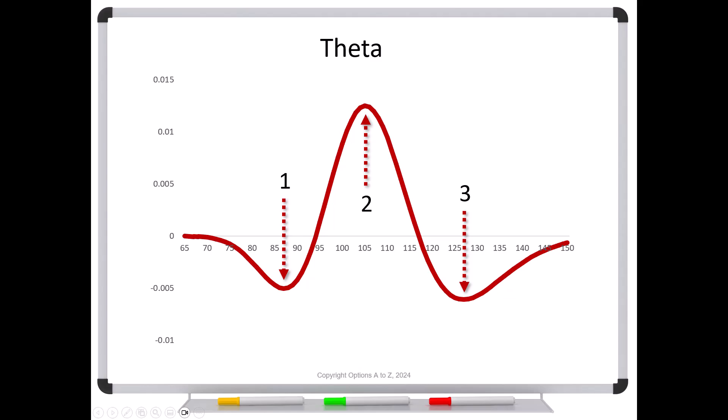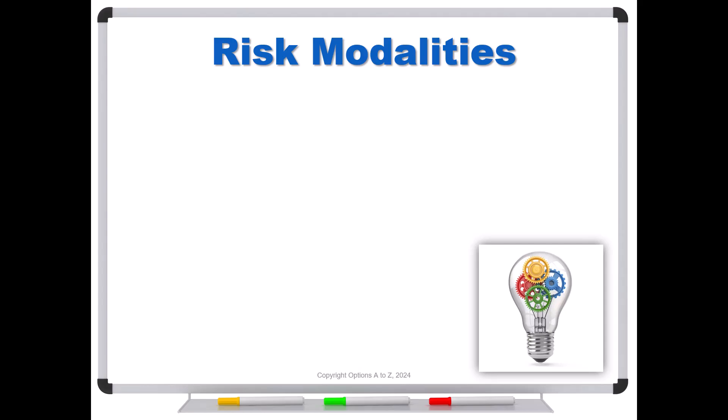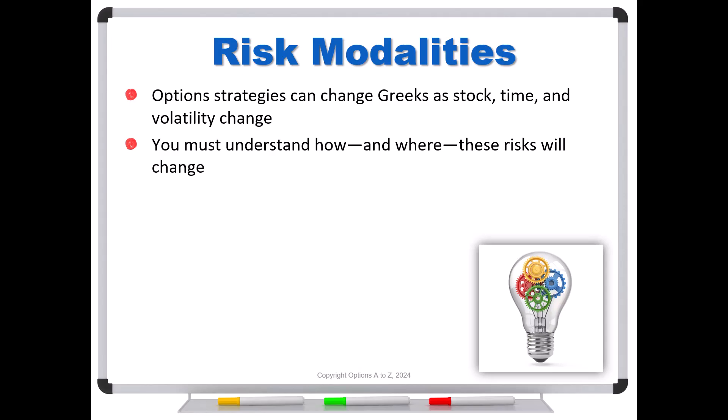So this is meant to be more of just for definition so that you understand, and if you get nothing else out of it, understand that for any strategy, things change. And at a minimum, time is going to change. That's going to change your deltas, which will change your gammas and your thetas and your vegas as the stock price changes, as volatility changes. And you need to not only be aware that they change, but where. And that's where your modalities come into play.